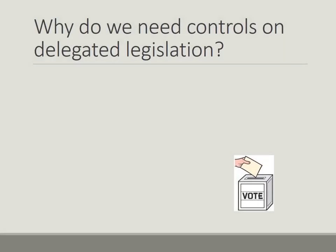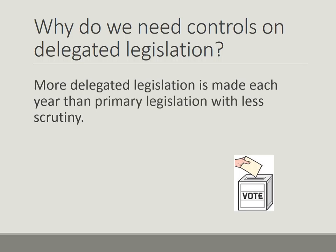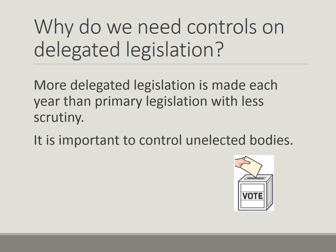Whichever question you're answering, you should always start with one or two sentences about why control of delegated legislation is needed. We know that over 3,000 statutory instruments are made each year, together with a large number of bylaws and orders in council. This delegated legislation is not looked at as carefully as bills in Parliament would be. It is also the case that bodies such as the Privy Council contain members who are not elected, so it is important to exercise control.